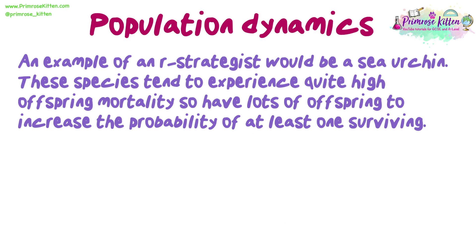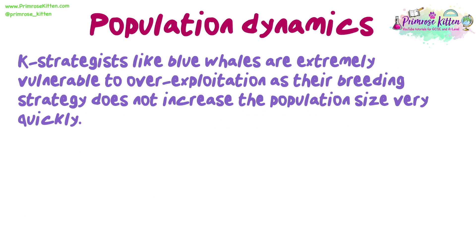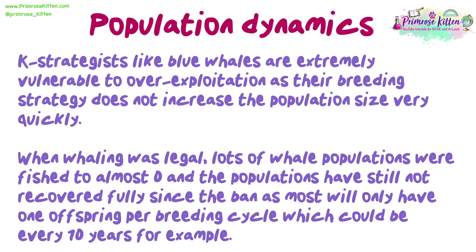An example of an R-strategist would be a sea urchin. These species tend to experience quite high offspring mortality, so they have lots of offspring to increase the probability of at least one surviving. Opposite to R-strategists are K-strategists, such as blue whales. They have one or two offspring, don't reach sexual maturity until later in life, and use high parental care to ensure high offspring survival. K-strategists are extremely vulnerable to overexploitation, as their breeding strategy does not increase population size quickly. When whaling was legal, many whale populations were fished to almost zero, and populations have still not fully recovered since the ban, as most will only have one offspring per breeding cycle — which could be every 10 years.